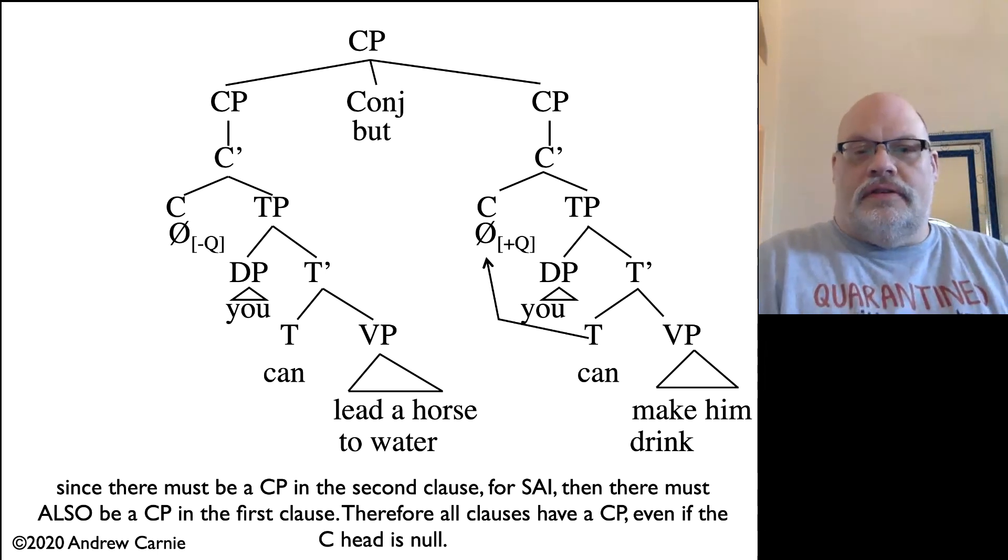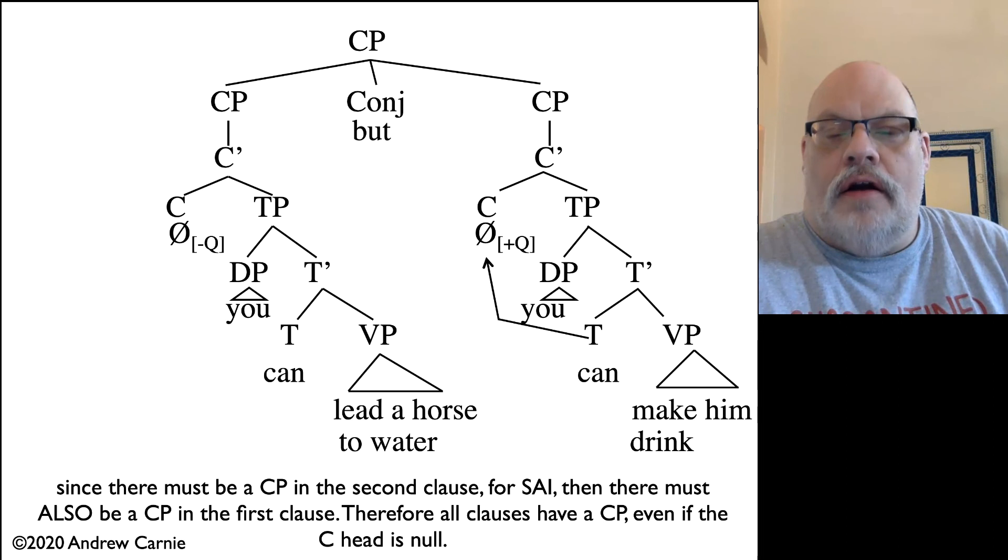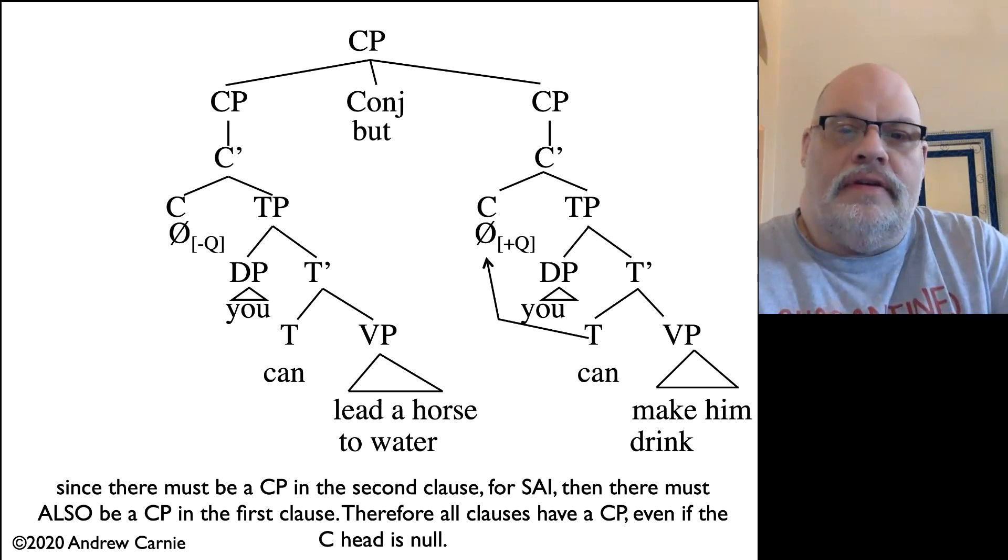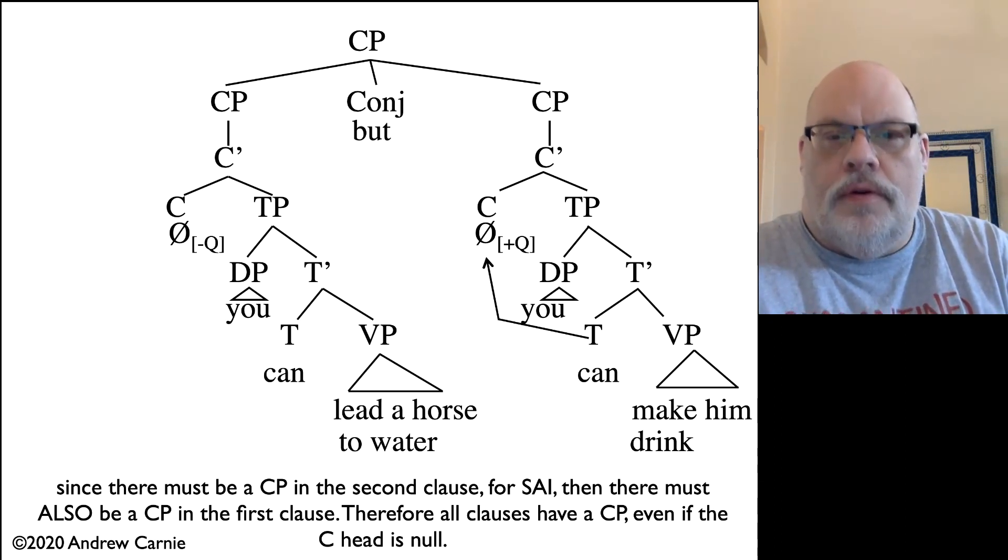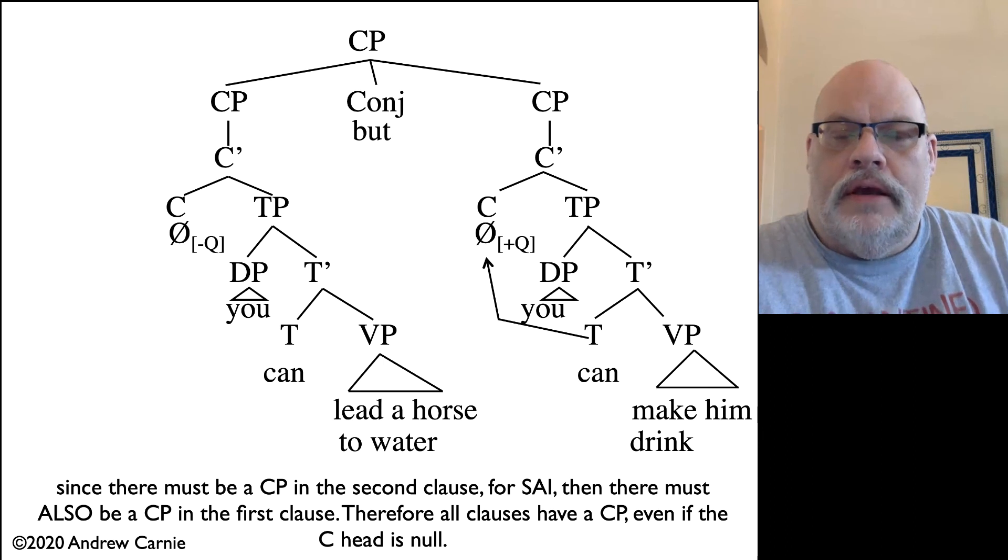So what's our conclusion to take away from this? This means that all clauses, including statements and main clauses, have CPs, even if that complementizer head is null. This parallels exactly our discussion of DPs, where DPs, we argued, had to have a determiner, even if there was nothing overt. So even for nouns like John, we had to propose that there was a null determiner. This explains the weird functional category exceptions to the headedness rules of our phrase structure rules. Instead, we simply have null functional categories that appear in the structure.